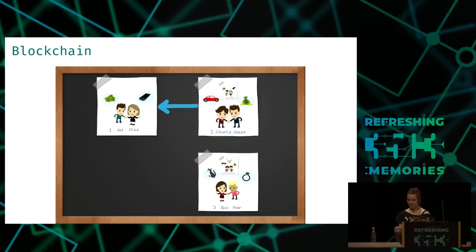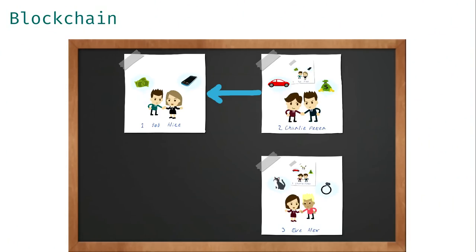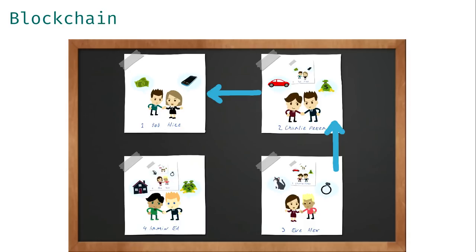Let's keep doing the same and add a third picture to the board. Here we can see Eve and Alex trading some goods. Again, we can see the second picture is in the background of this third picture. The third is chained to the second. For the sake of completeness, we add a fourth block where Armand and Ed are trading — and this house is more expensive this time. Again, we see the content of the third block in the background of the fourth block, so they are chained.